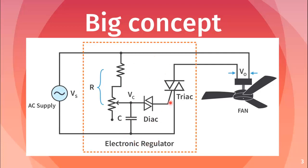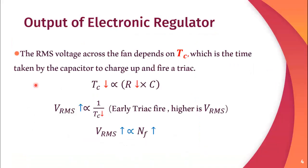This is the electronic circuit of the electronic regulator. I will simply brief the working principle of this electronic regulator. In an electronic regulator, the RMS voltage across the fan is controlled by controlling the firing angle of a triac. And the firing angle of the triac is controlled by changing the charging time of a capacitor.